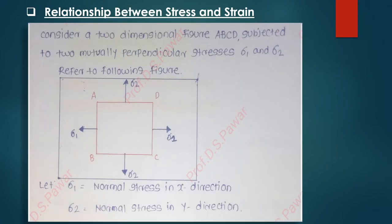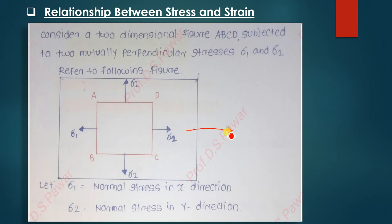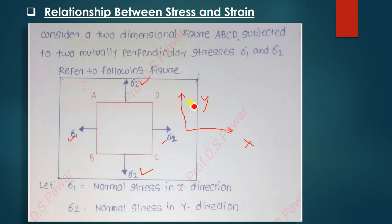Here you can see a two-dimensional diagram — A, B, C, D. This body diagram is subjected with two stresses. The horizontal direction is the x direction and the vertical direction is the y direction. Along x, the stress is applied as sigma 1 and sigma 1, and along the vertical direction the stress applied is sigma 2 and sigma 2. Sigma 1 is the normal stress in the x direction and sigma 2 is the normal stress in the y direction.